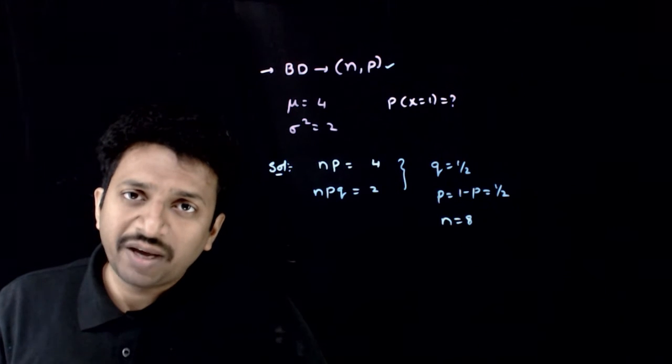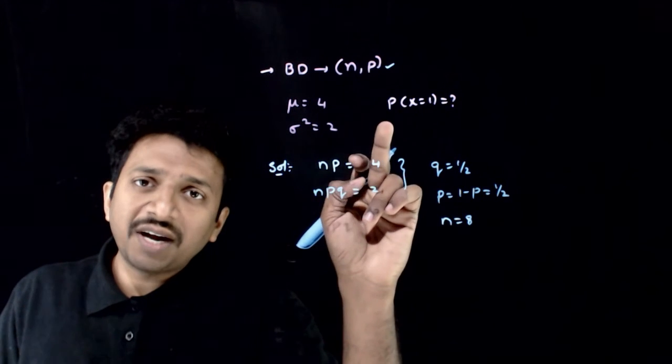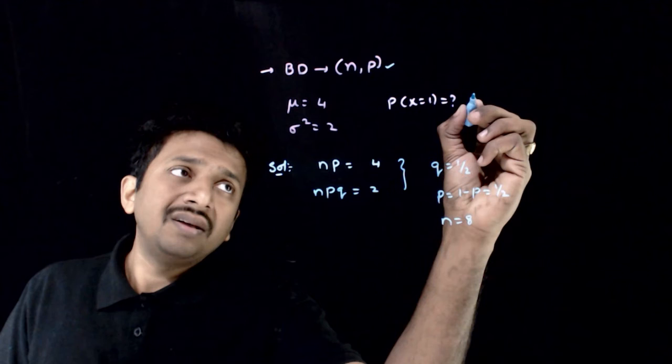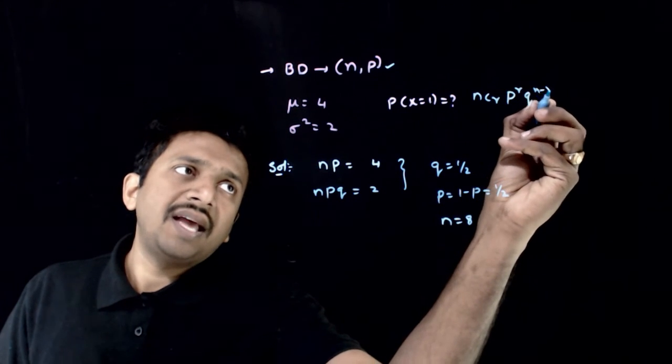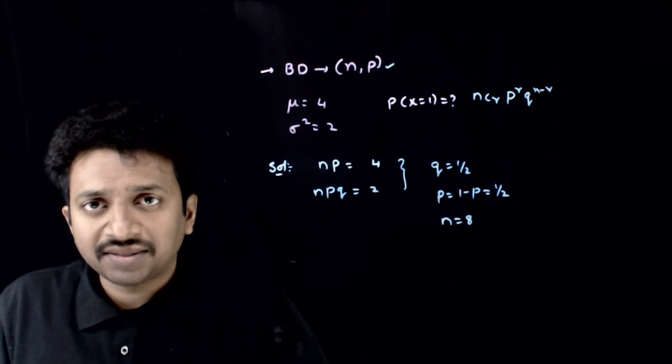So these are the properties of this binomial distribution. Now you are asked to find P of x is equal to 1. P of x is equal to R is NCR, P power R, Q power N minus R.